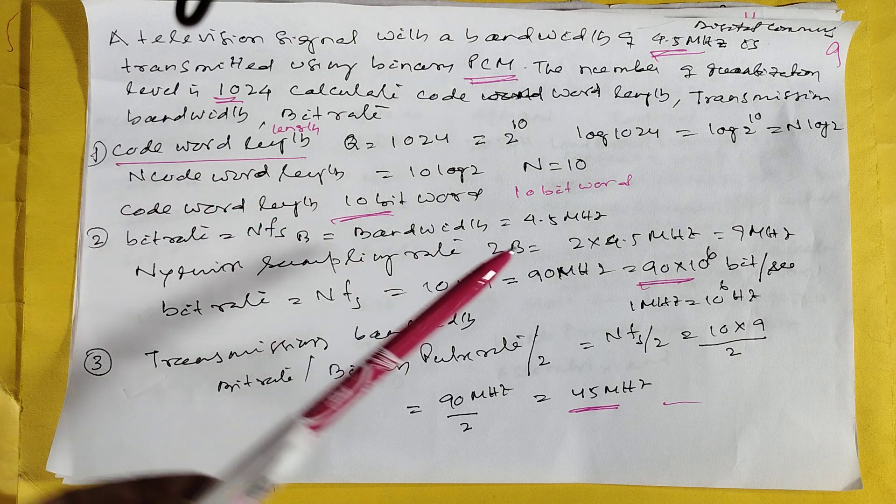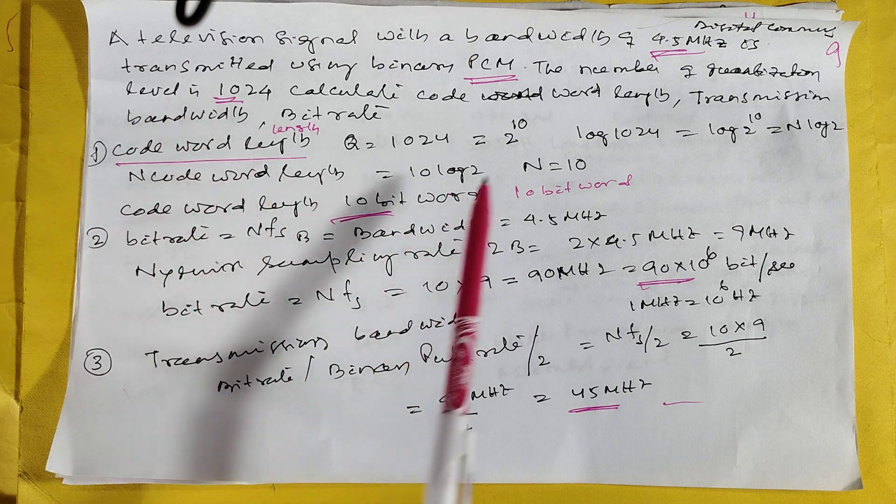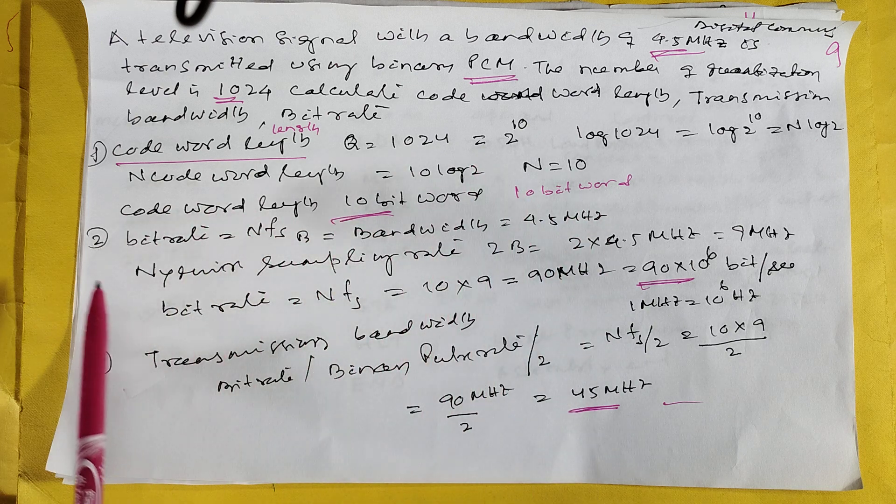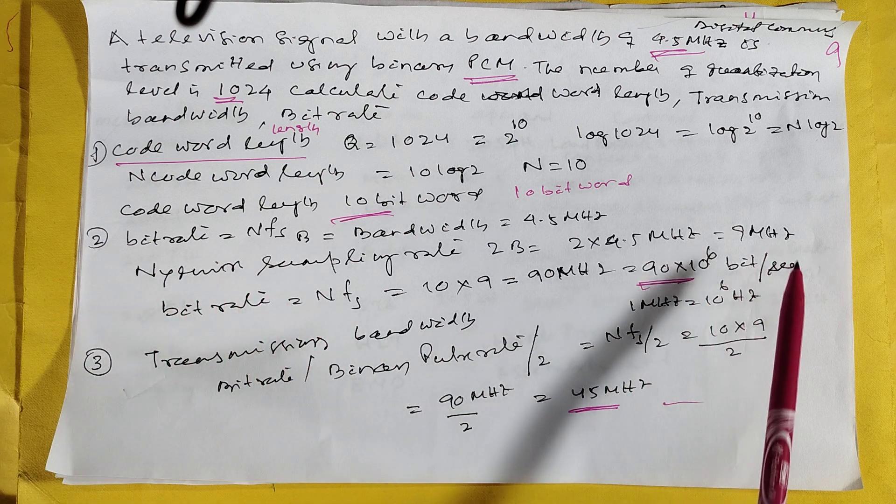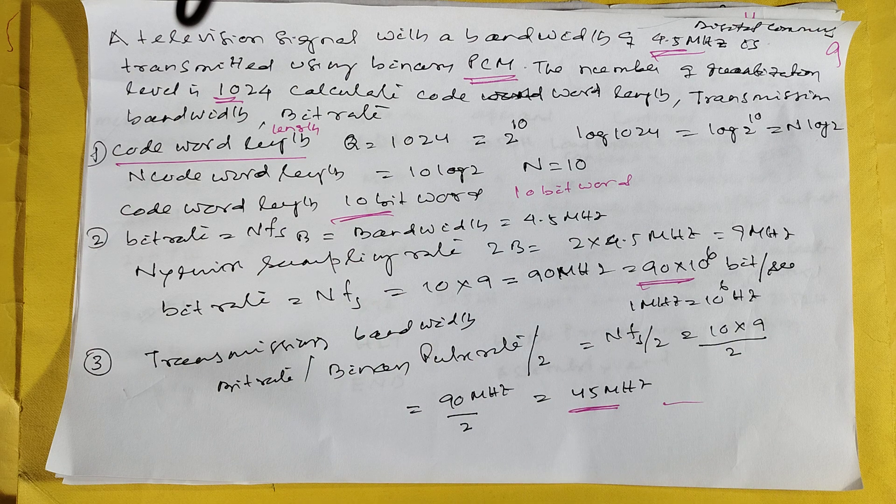Two to ten, you put n. N means code word length, 10 bit. What is the bit rate? What is the sampling frequency? Requested 2 bandwidth, 9 megahertz. Bit rate equals n times fs. N times fs, this is 10, so it is coming 90 megahertz. And transmission bandwidth is half of nfs, 45 megahertz.